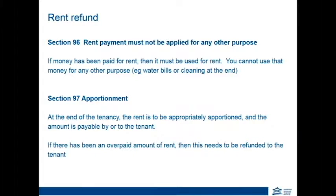Just touching on the final part of the refund side: if money has been paid for rent, it needs to be put towards rent. Under section 96, it cannot be used for other purposes such as water or cleaning bills at the end of the tenancy. Please note section 96 carries penalty provisions — 40 penalty points. The other part to bring up is section 97, the apportionment: at the end of the tenancy, rent is to be appropriately apportioned, and should the tenant overpay rent at the end of the tenancy, this needs to be refunded back to the tenant.